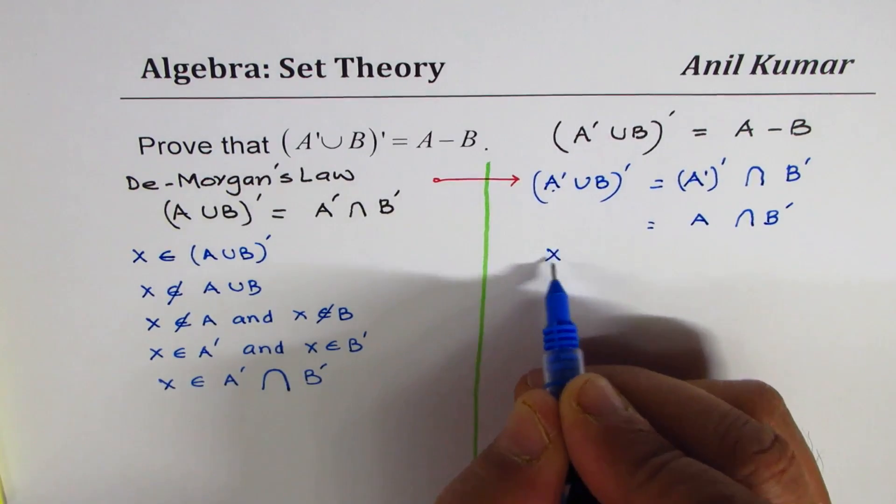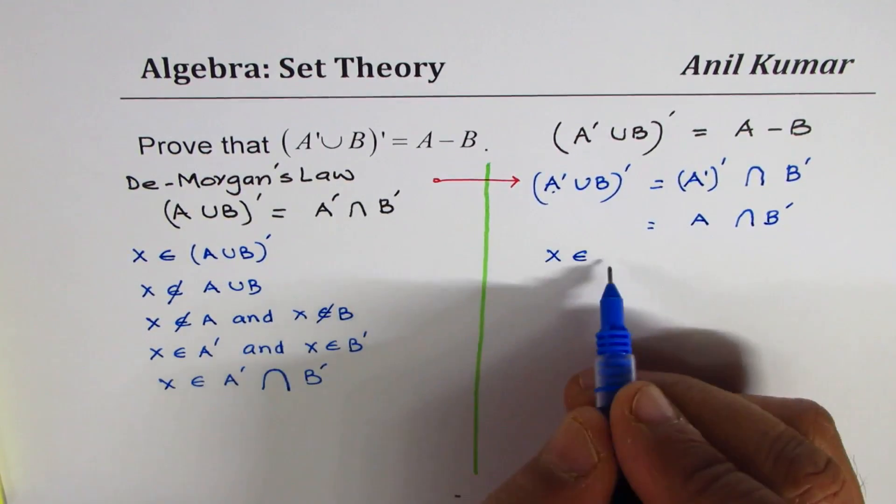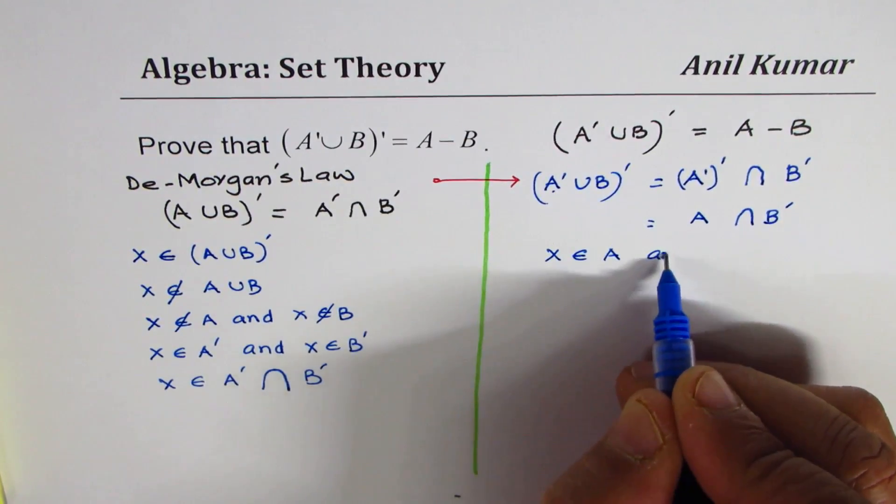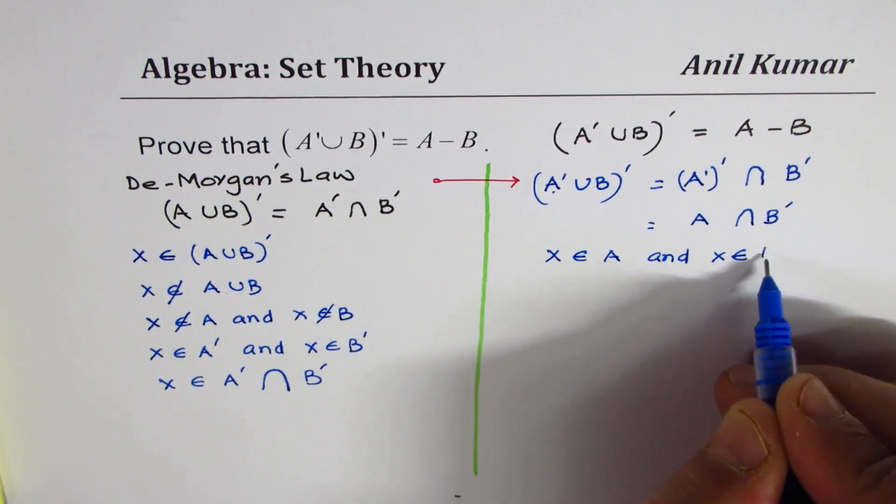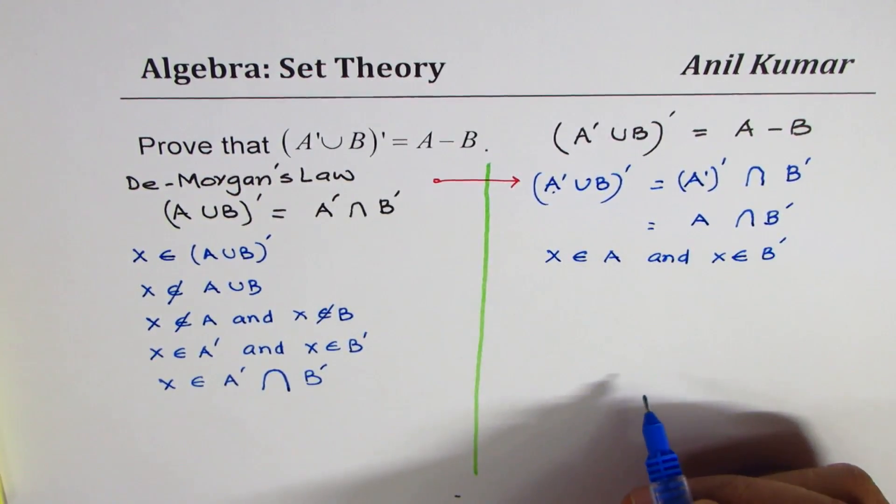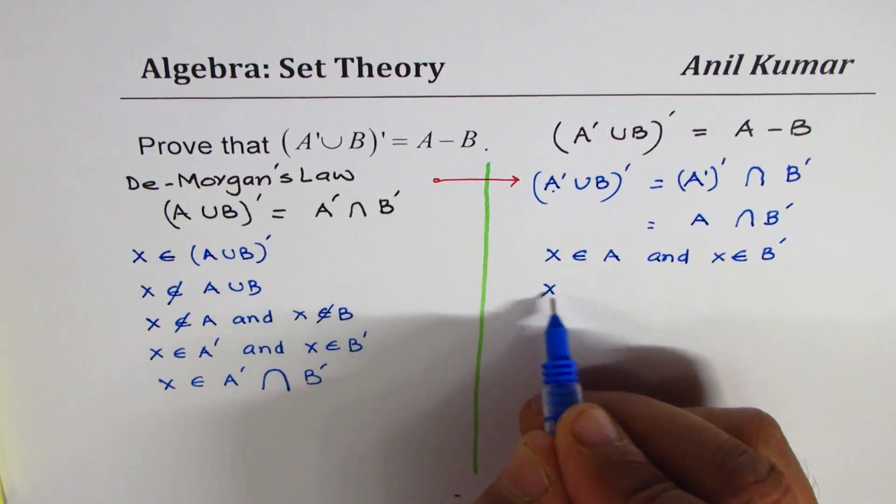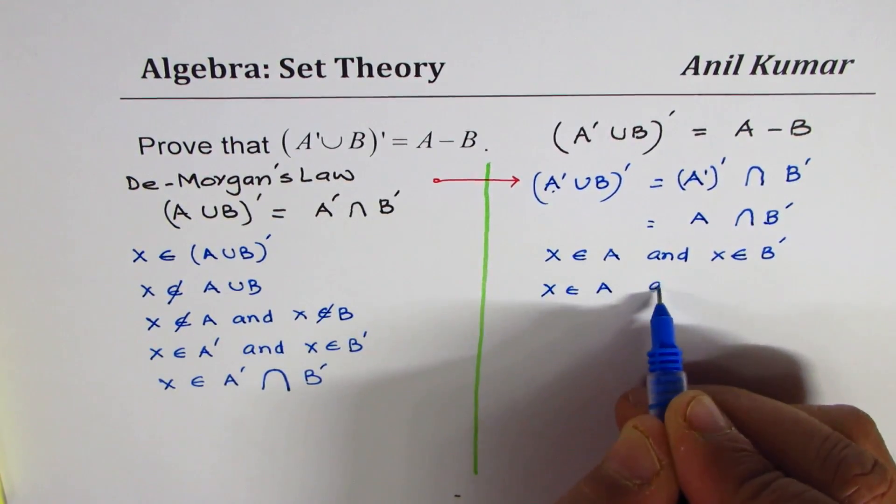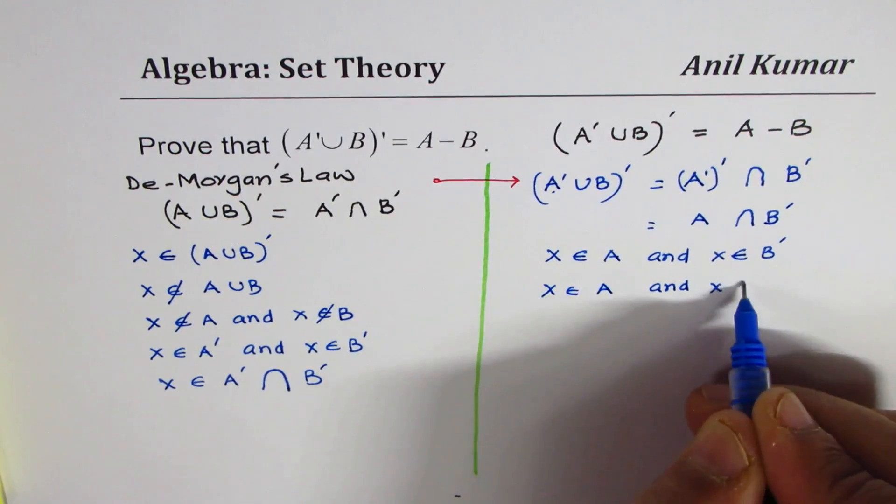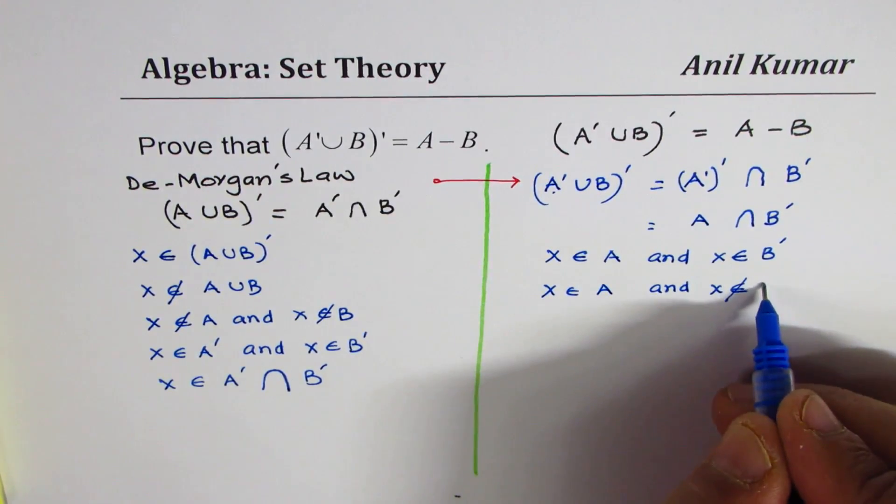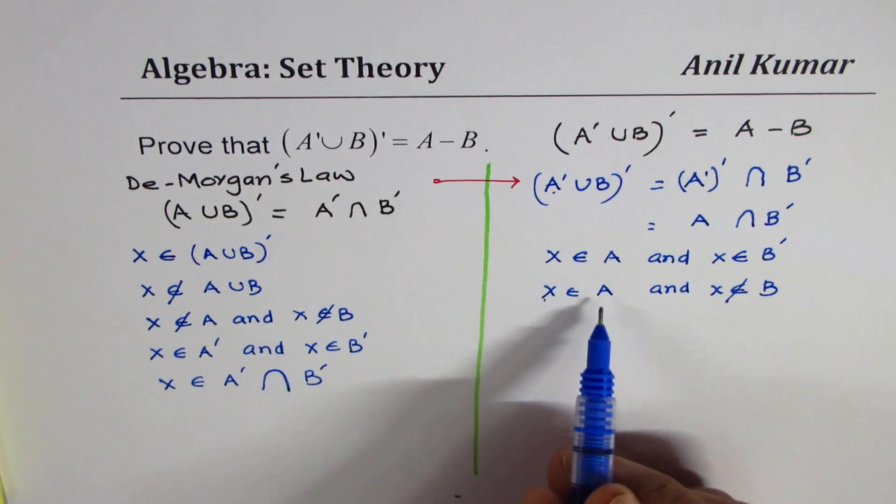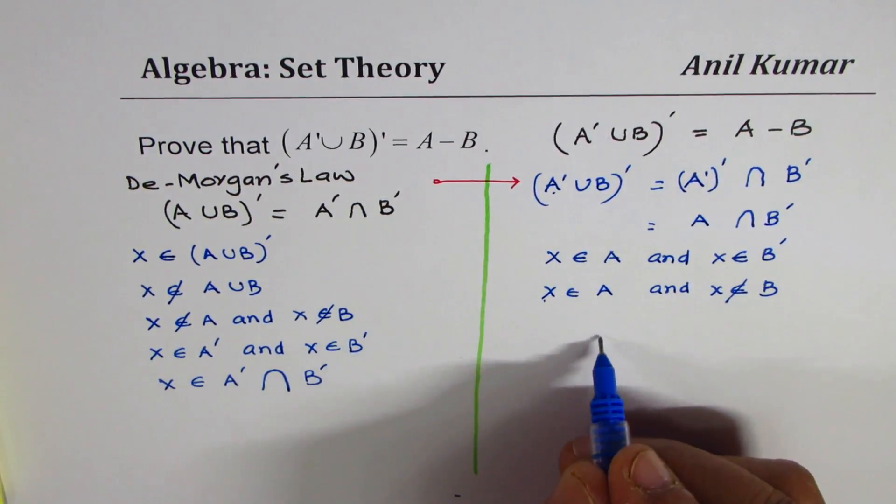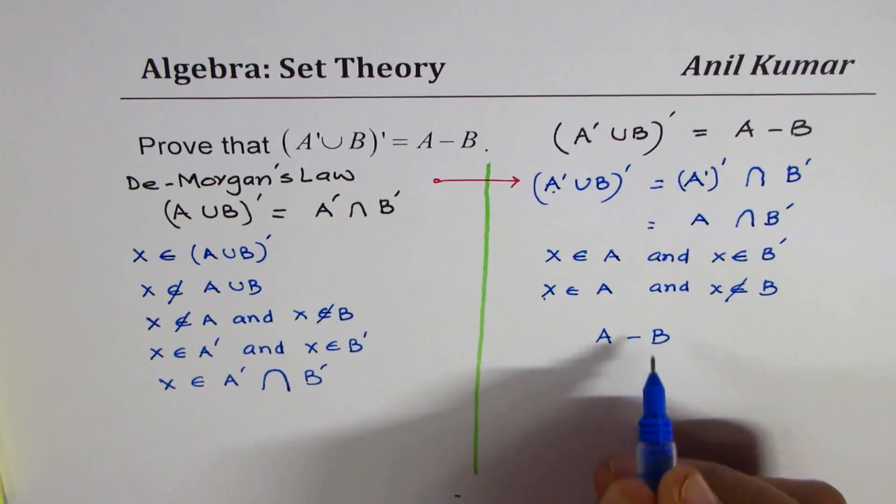Now when I say that, it really means that the element x belongs to A and x belongs to complement of B, or I could say x belongs to A and x does not belong to B. When I say x belongs to A and x does not belong to B, I write this as A minus B.